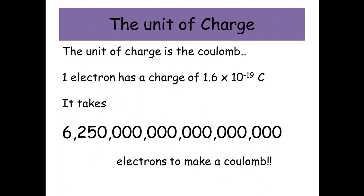The unit of charge is something called the coulomb. One electron has an incredibly tiny charge: 1.6 times 10 to the minus 19 coulombs. And in fact, it takes 6.25 million million electrons to make a coulomb of charge.